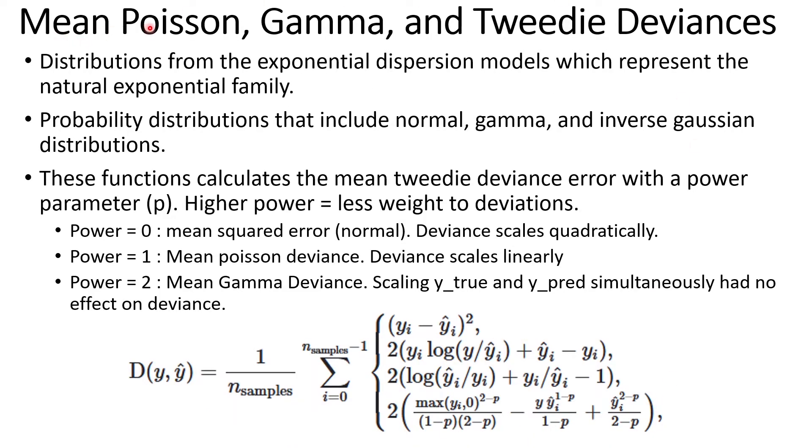So these are mean Poisson, mean gamma and tweeted deviances. These are distributions from the exponential dispersion models, which represent the natural exponential family. These are probability distributions that include normal, gamma and inverse Gaussian distributions. These functions calculate the mean deviance error with a power parameter, that's p.